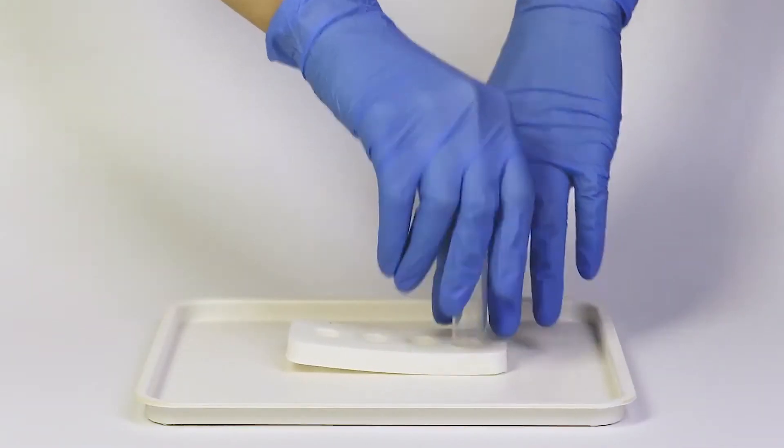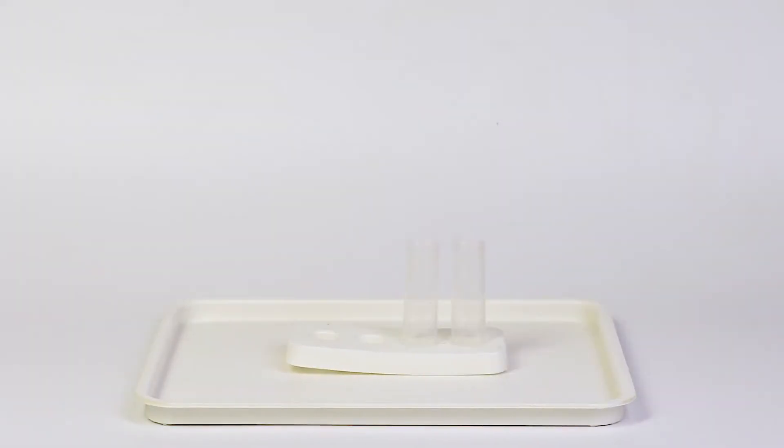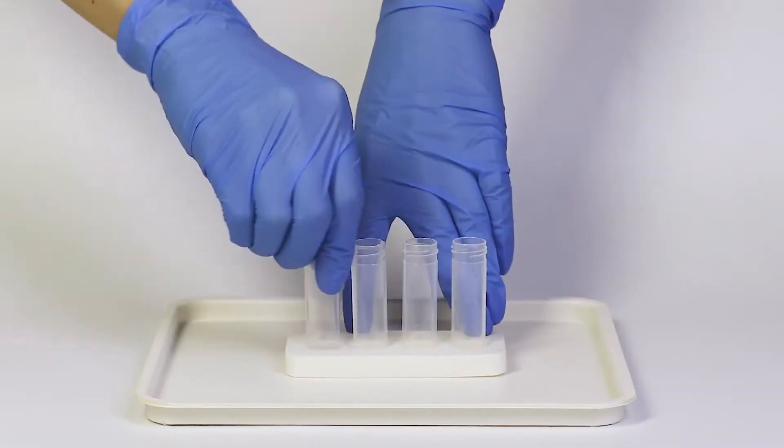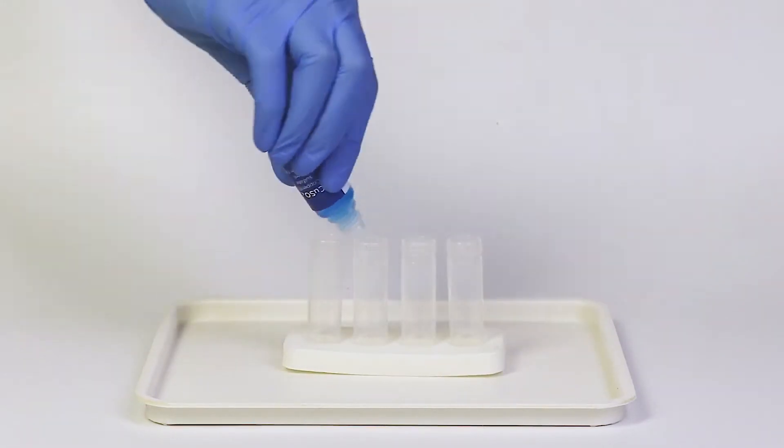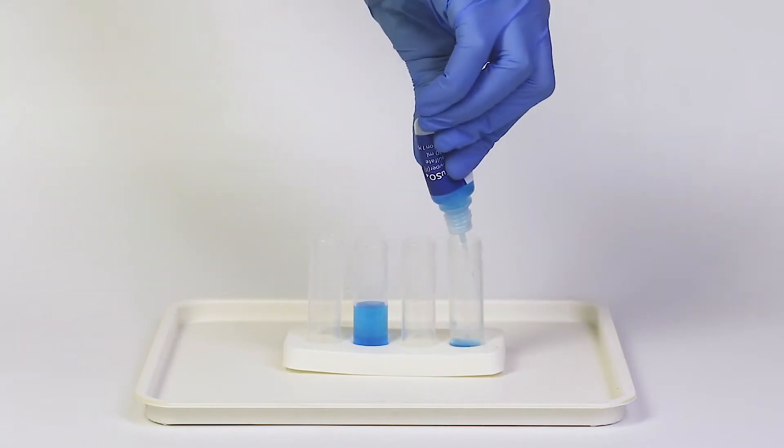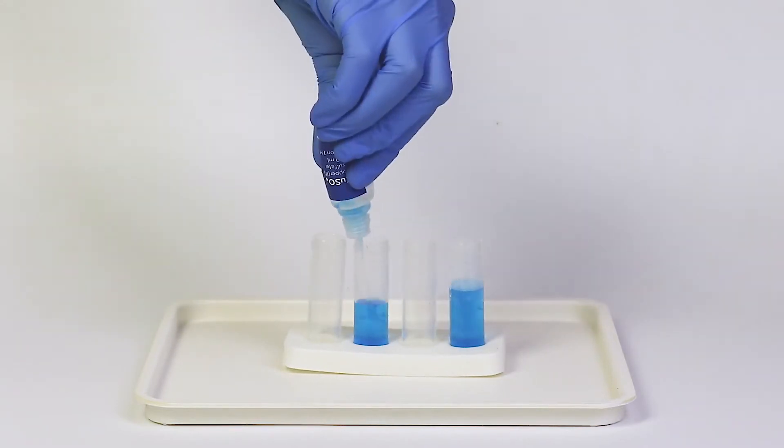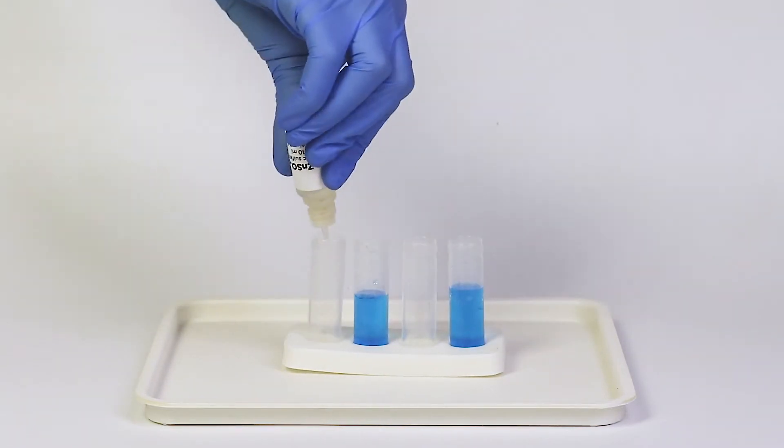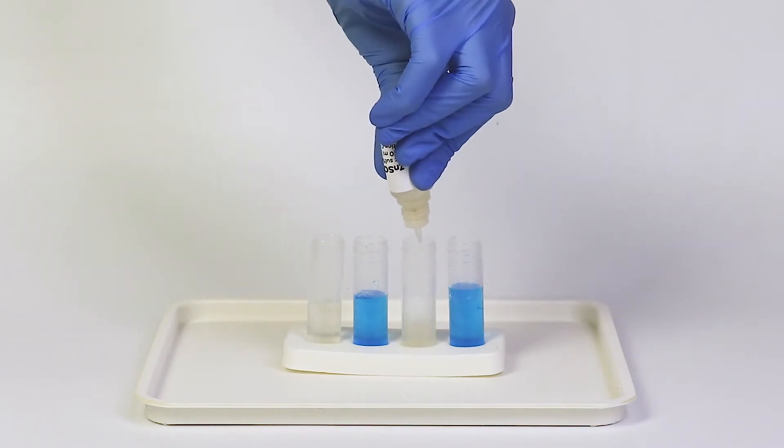Set all four vials into the holder. Pour half a bottle of copper sulfate into the second and fourth vials, and half a bottle of zinc sulfate into the first and third vials.